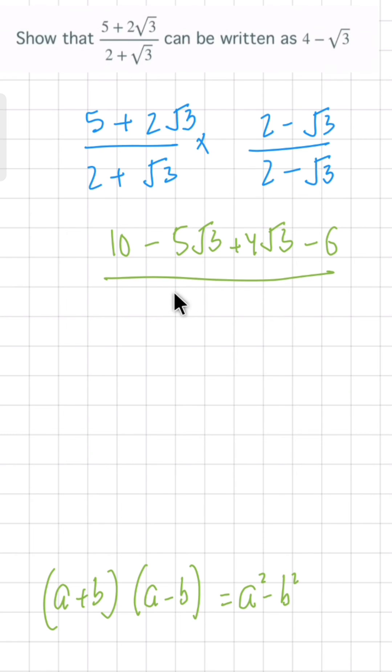So 2 + √3 into 2 - √3 should be written as 2² - (√3)².